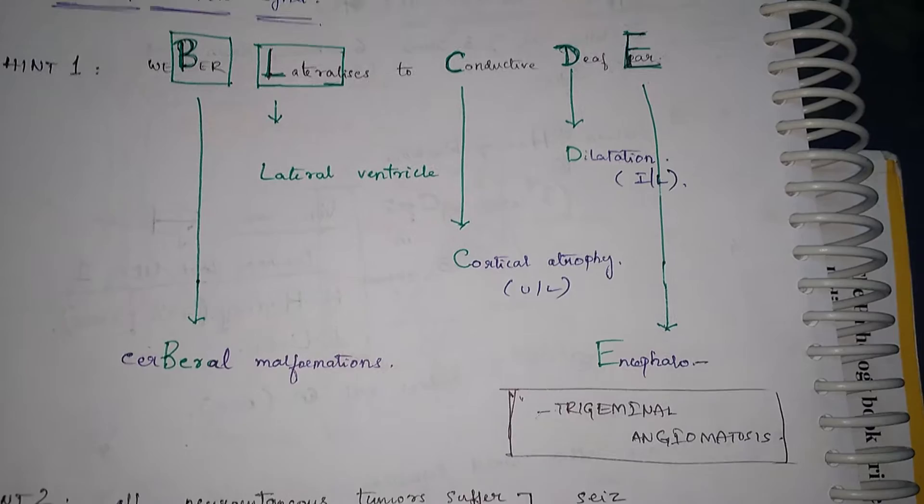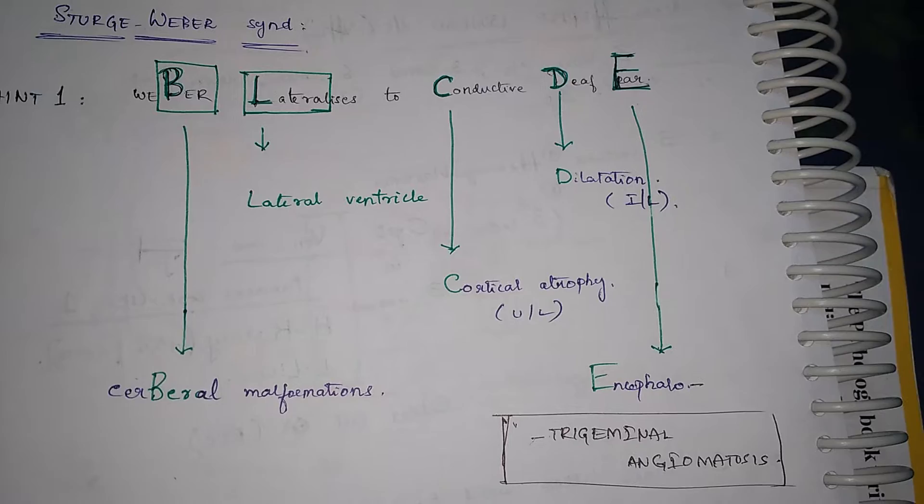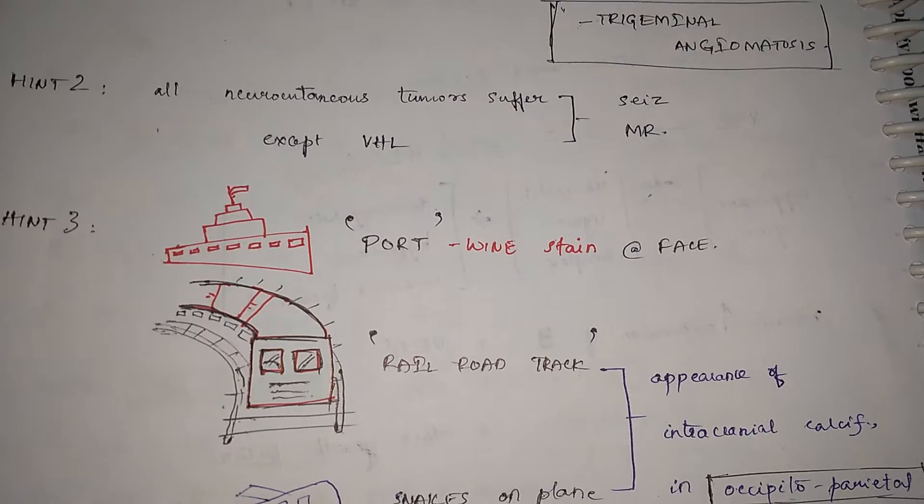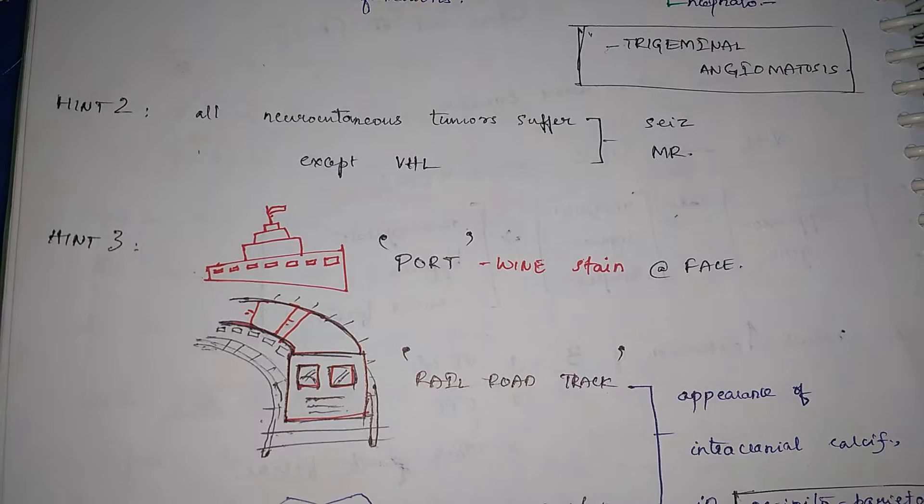I know it's a hard catch but it is other name of Sturge-Weber so it is important and as you can see it is followed by a hint two all Neurocutaneous Tumors suffer from seizures and mental retardation except VHL.